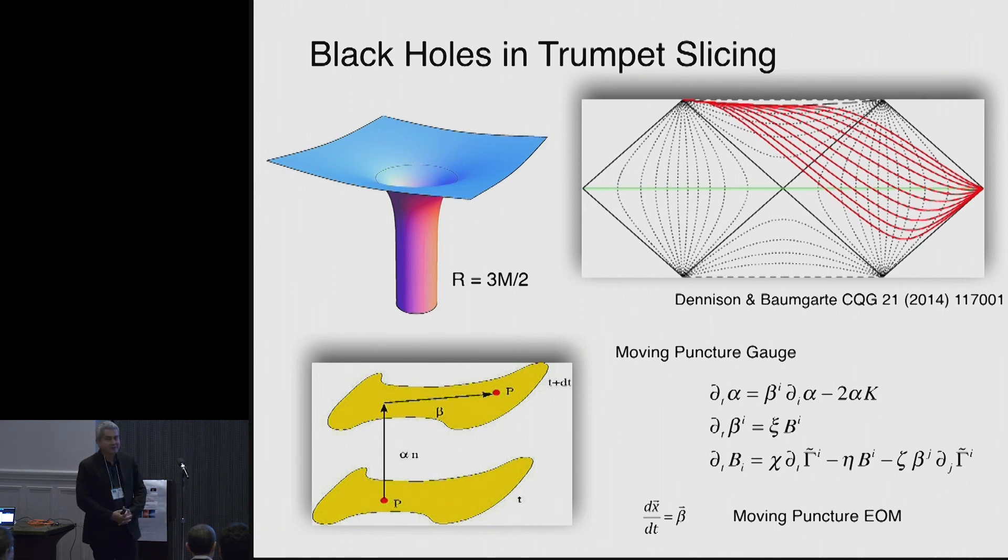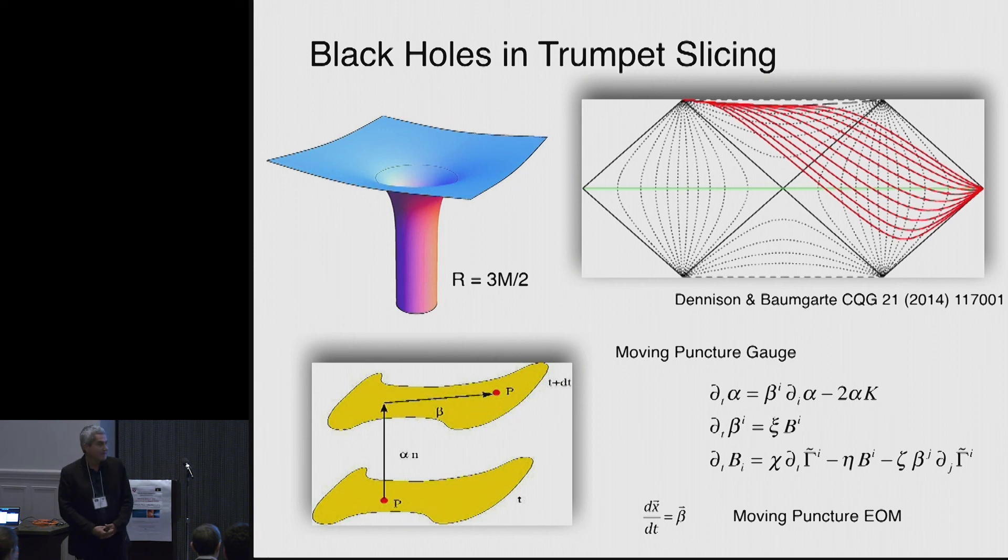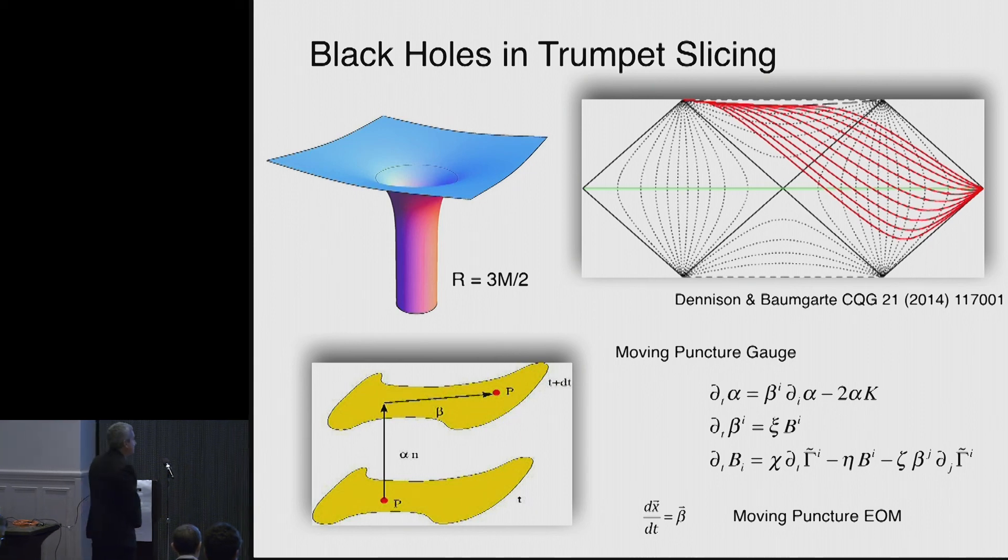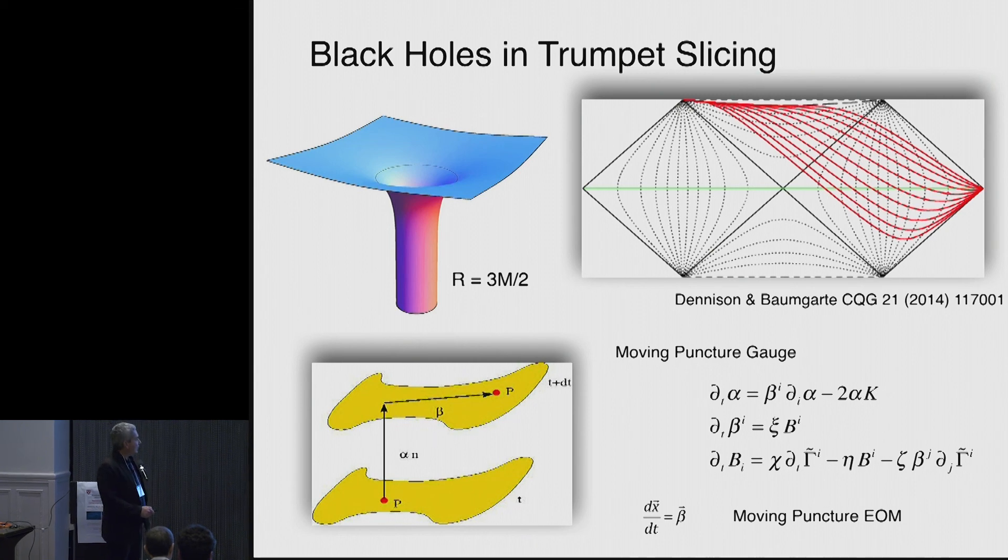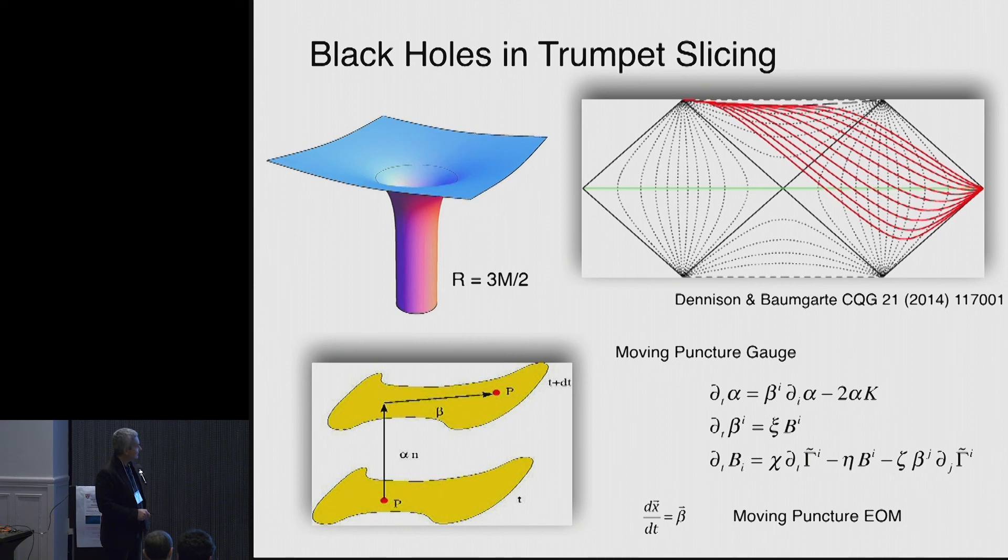And this is what is called the moving puncture gauge. It was found a little bit by trial and error. And it turns out that up to 2005, the community had all of this except this term and this term here.